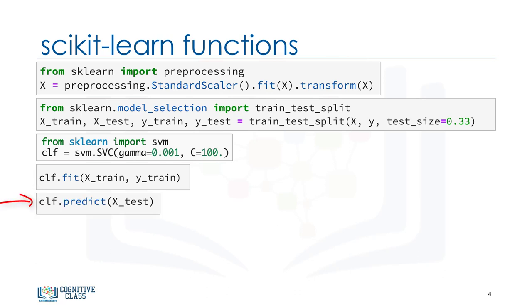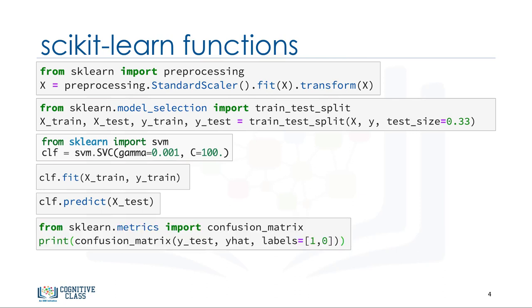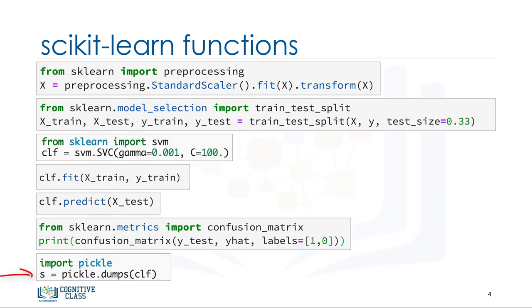Then we can use our test set to run predictions, and the result tells us what the class of each unknown value is. Also, you can use different metrics to evaluate your model accuracy. For example, using a confusion matrix to show the results. And finally, you save your model.